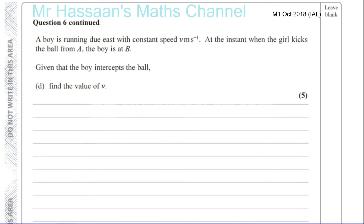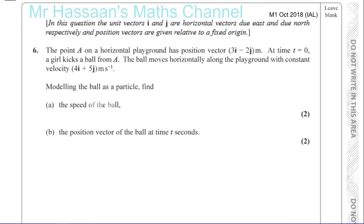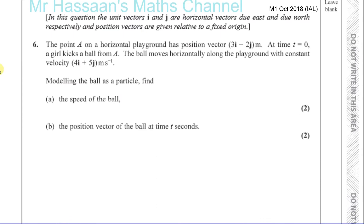Question number 6 from October 2018 International A-Level — a vectors question. In this question, the unit vectors i and j are horizontal vectors due east and due north respectively, and position vectors are given relative to a fixed origin. The point A on a horizontal playground has position vector 3i minus 2j. At time t equals 0, a girl kicks a ball from A. The ball moves horizontally along the playground with constant velocity 4i plus 5j.